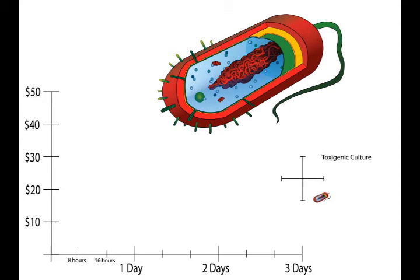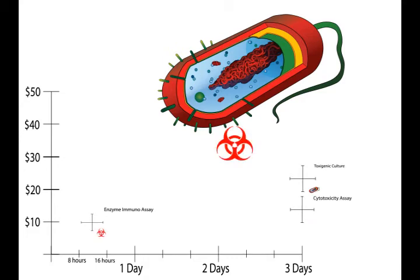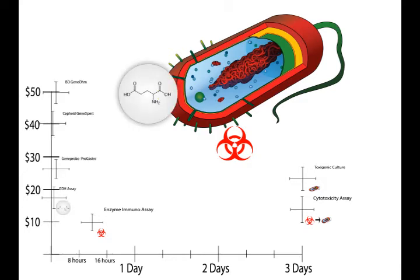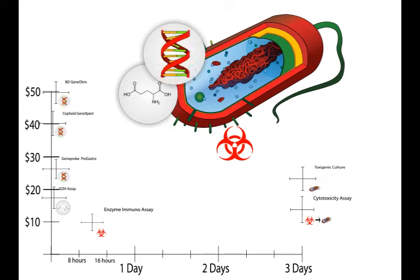Let's compare this test to the many others available. Enzyme immunoassay detects C. diff poison chemically. Cytotoxicity assays detect the poison by cell damage. GDH assays detect the C. diff specific chemical. And PCR methods extract, multiply, and detect C. diff DNA. Notice that the expensive tests, perhaps to no surprise, work faster, while the cheaper tests take longer.